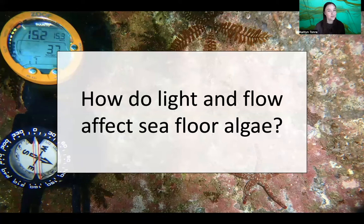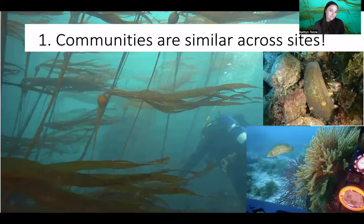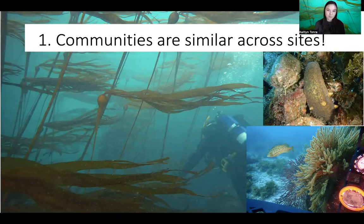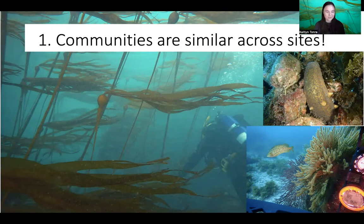Now for the answer to the question: how do light and flow affect seafloor algae? The first finding is that in some ways there aren't huge differences. Communities were similar across all our sites in terms of what species were present — we had around 75 species overall throughout all the surveys, and most of those species were present at all of the sites. We didn't end up with sites that had tons of unique species found nowhere else; overall, communities were made up of similar organisms.